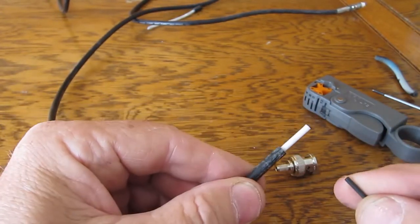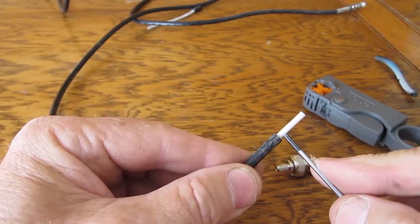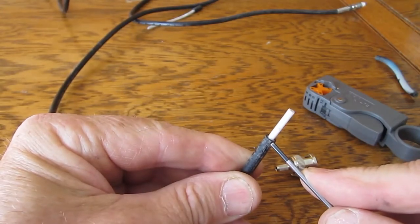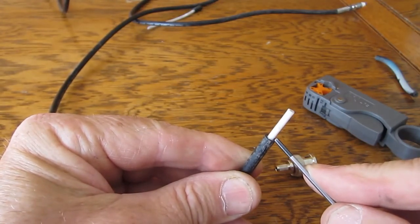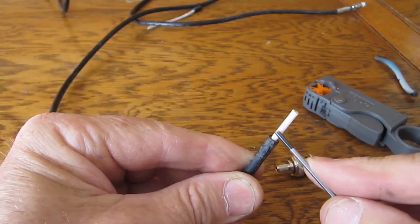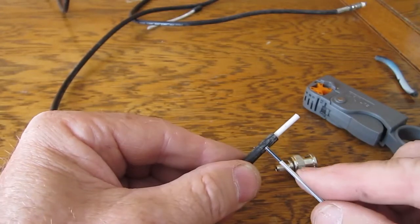So that this cut here has cut through the black outer jacket as well as the braid or screen, and it's left the center conductor intact.